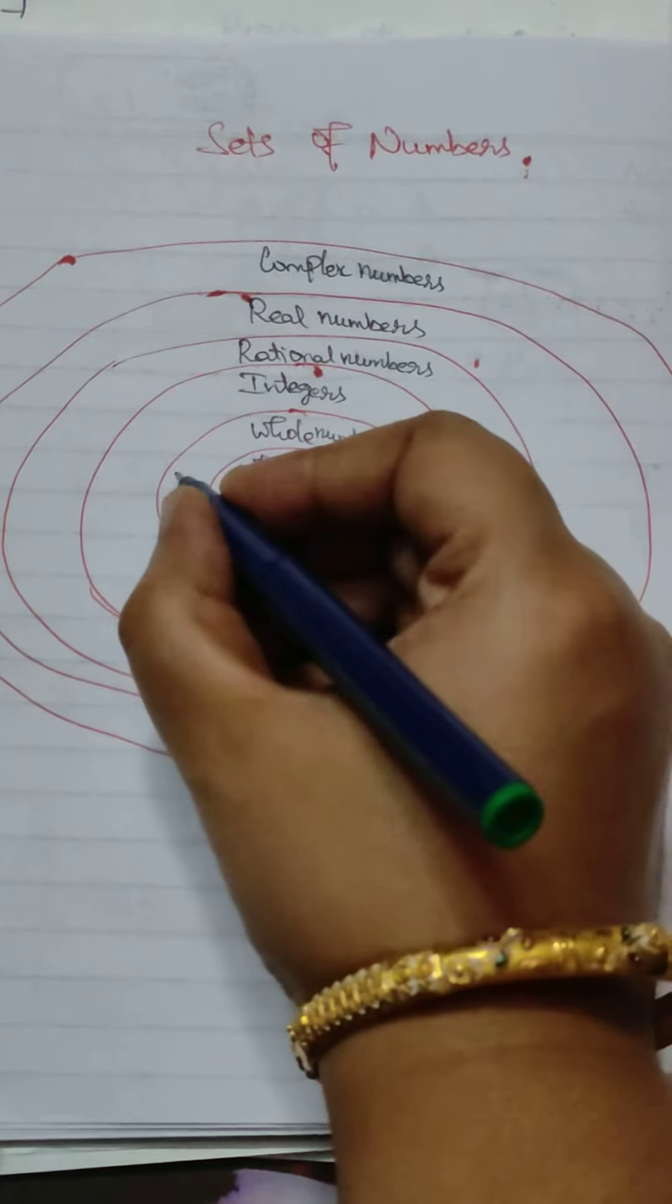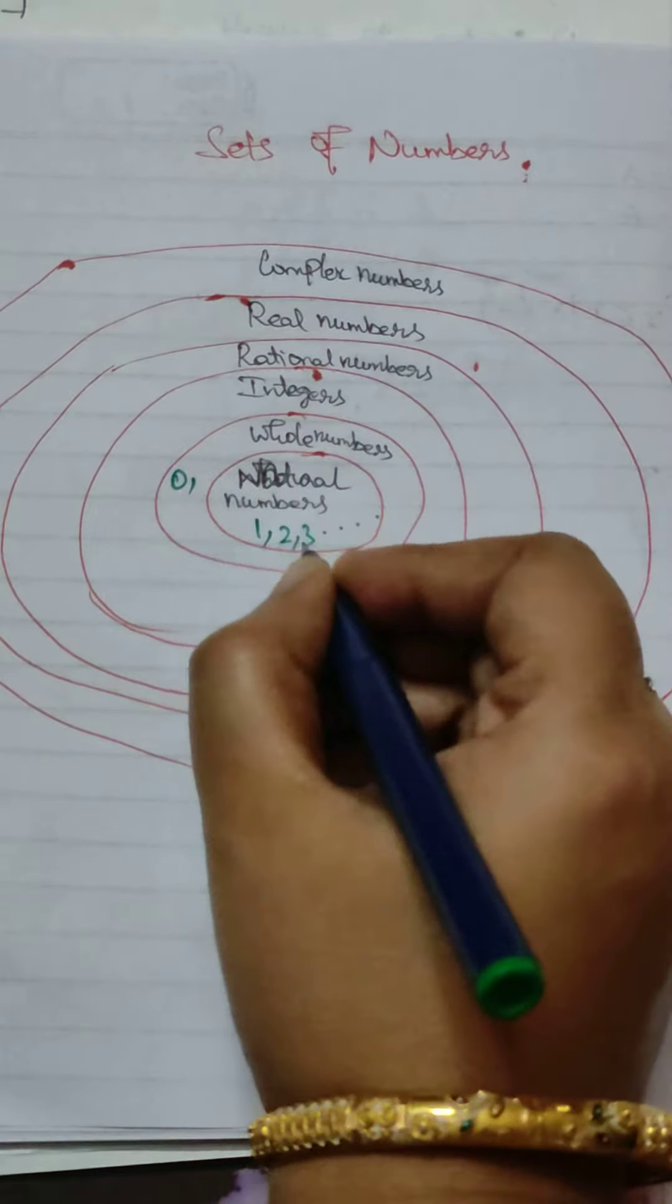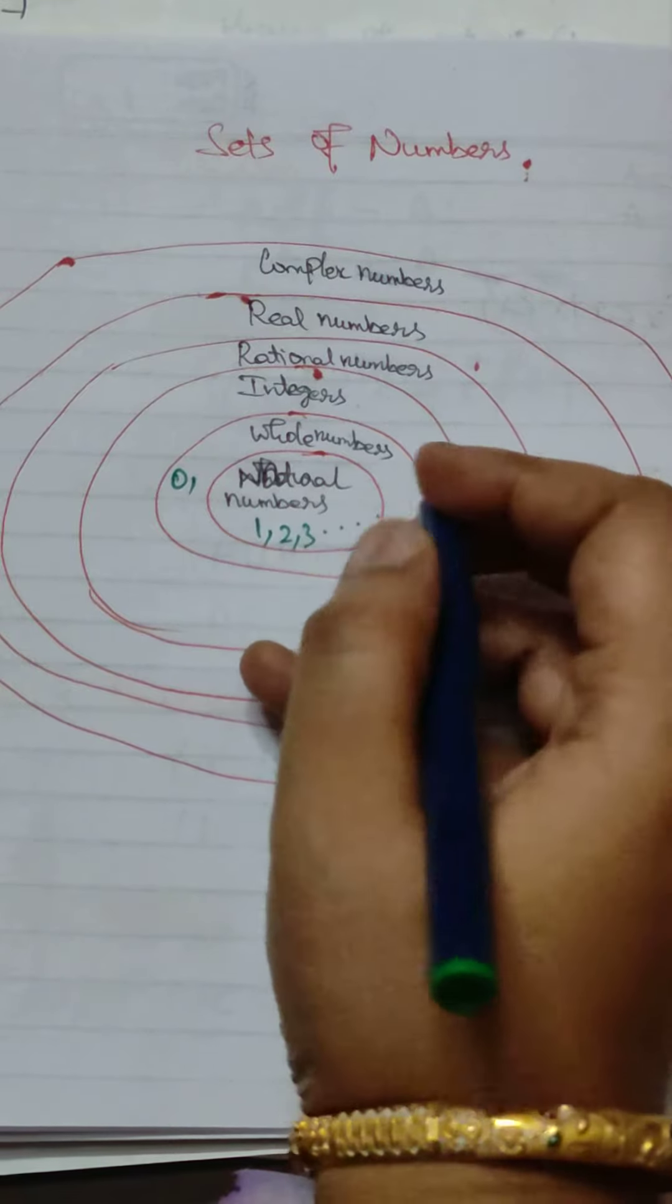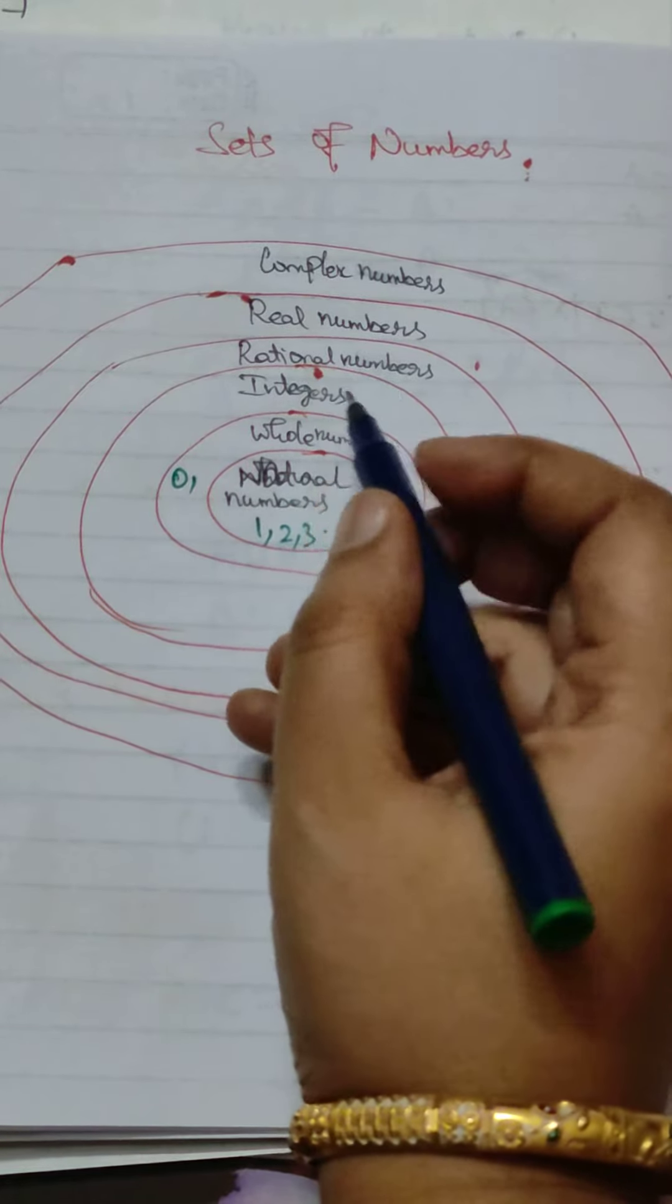What is whole number? It starts with 0. 0, 1... zero and natural numbers make whole numbers.